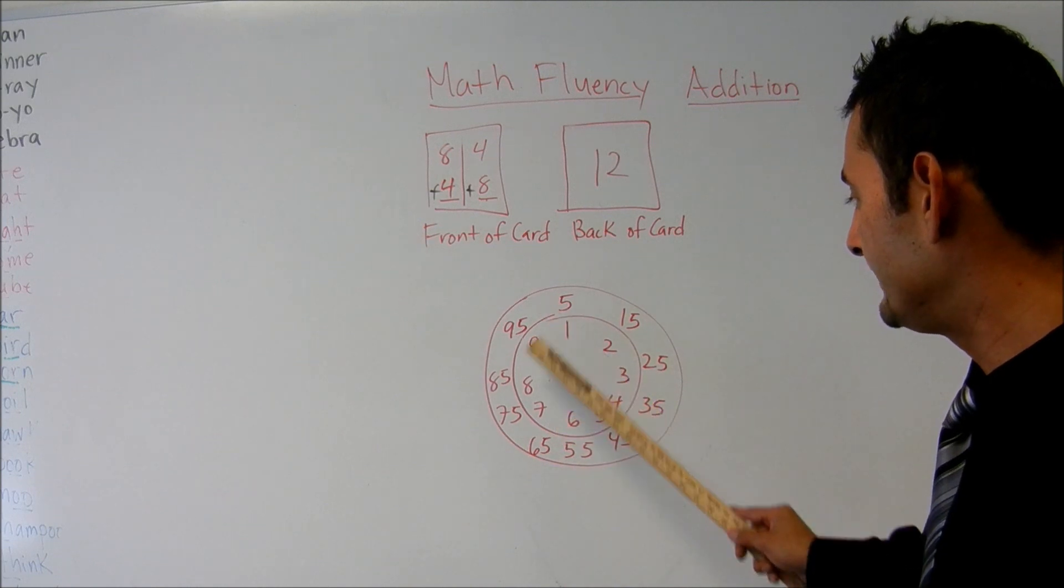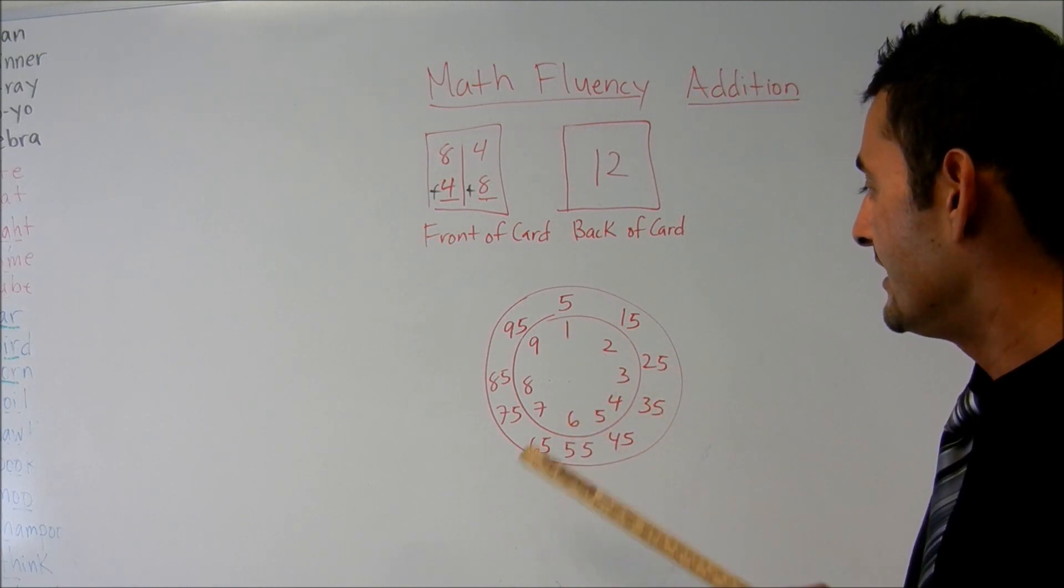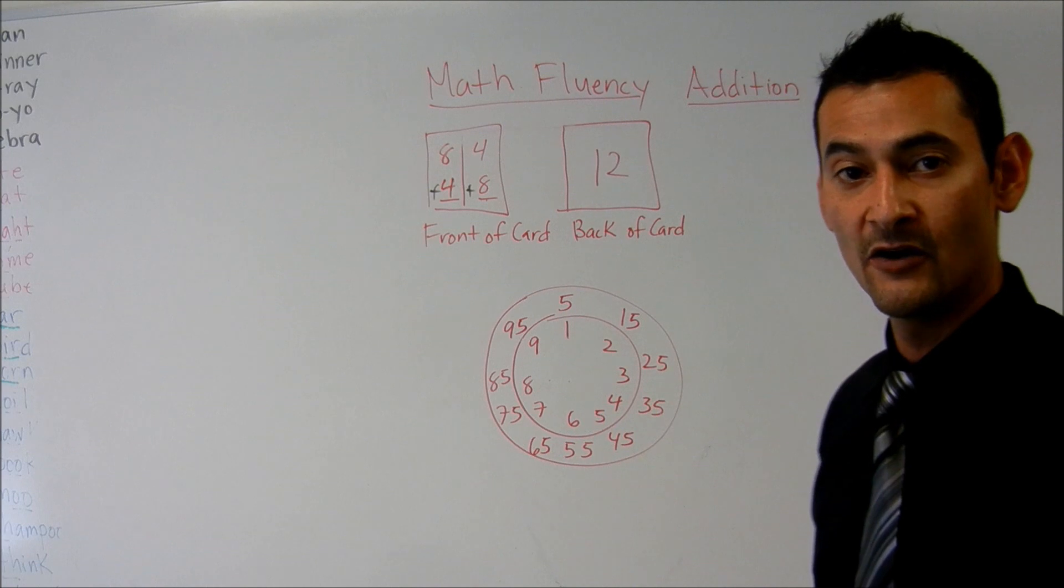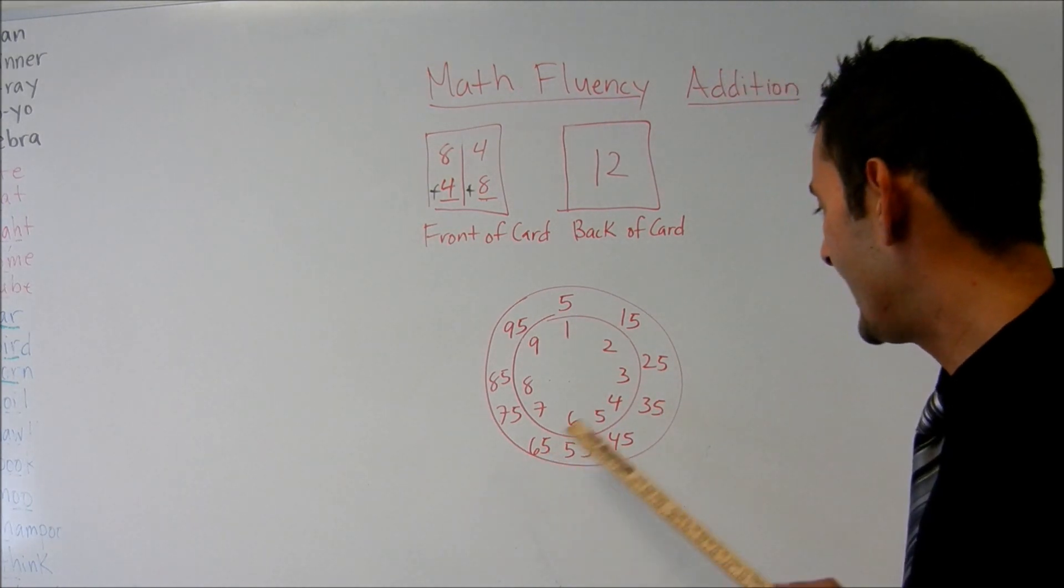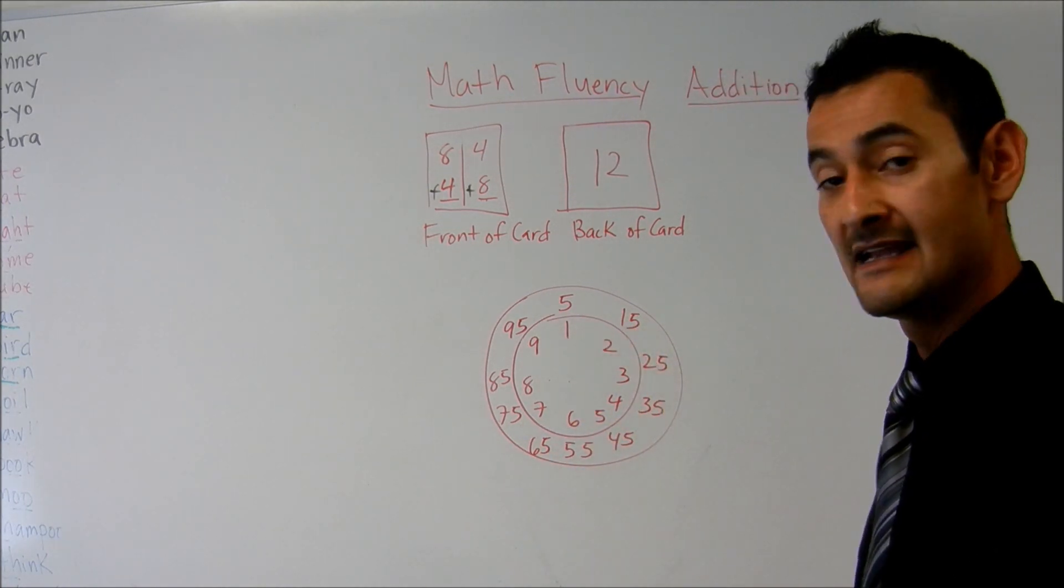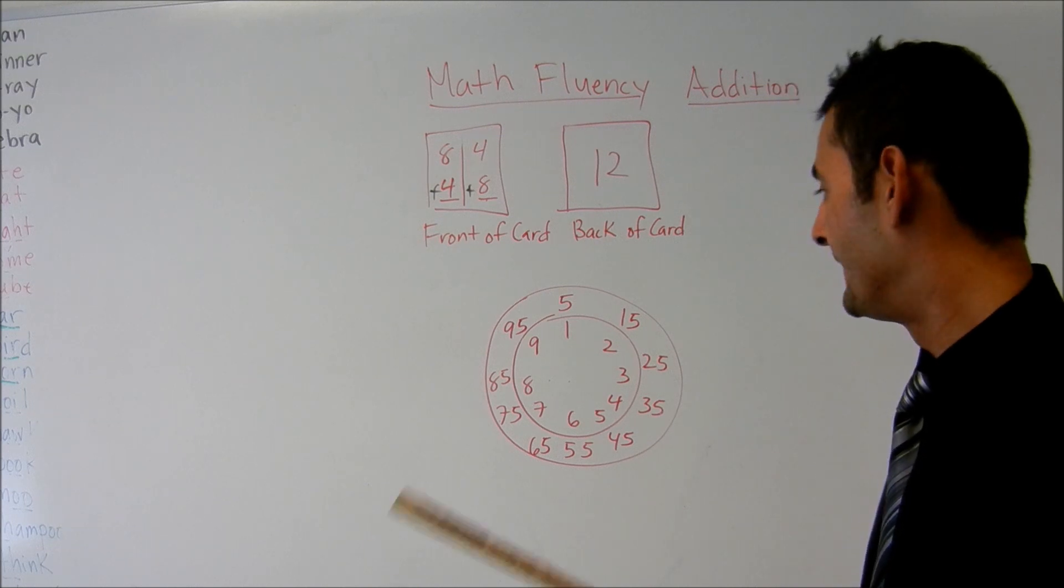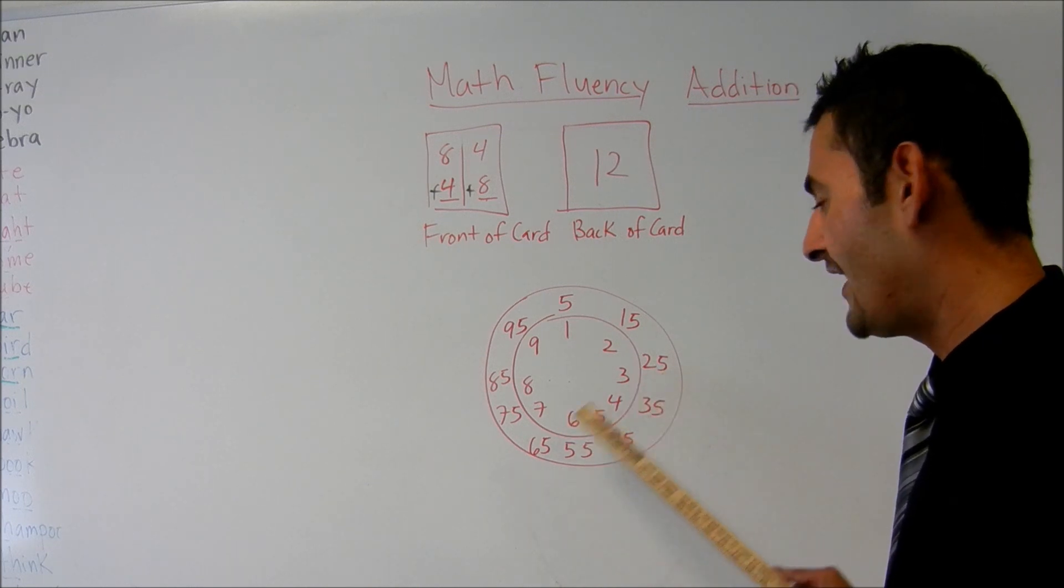So, for example, if we did the number six here, it would be six plus five and we know that that's eleven. Then you would have your child do six plus fifteen. Then they would see that it's twenty-one. Then you would do six plus twenty-five. And guess what? It's going to be thirty-one.